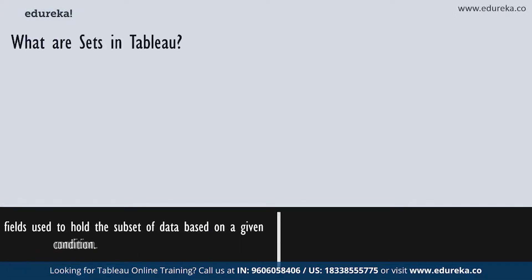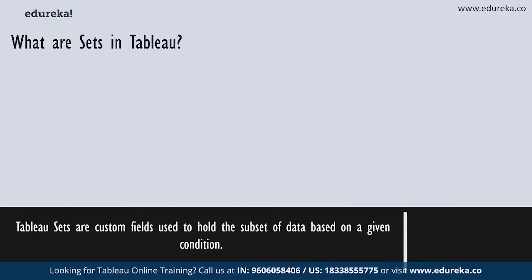So what are sets in Tableau? Tableau sets are basically custom fields which are used to hold a subset of data based on a given condition. In real time, you can create a set by selecting members from the list or from a visualization. You can also do so by writing custom conditions or selecting top or bottom few records in a measure. Simply put, a Tableau set is a field which holds certain parts of your data to which you can apply a certain condition.